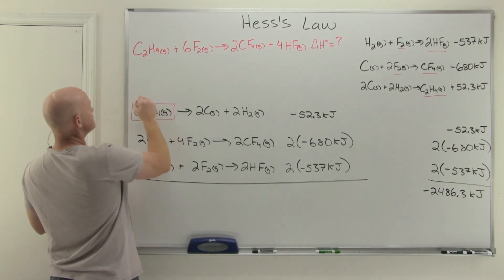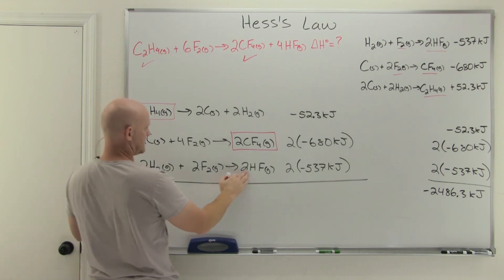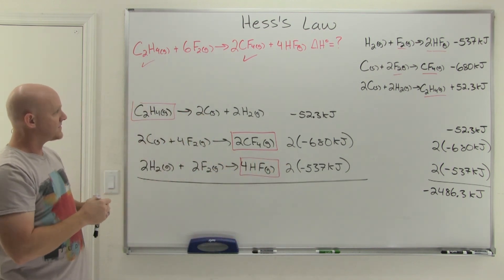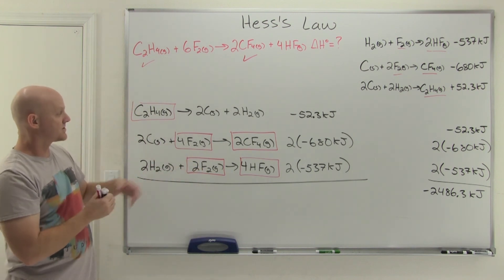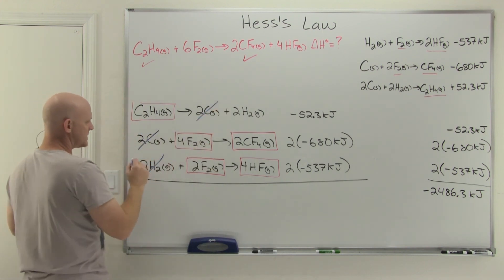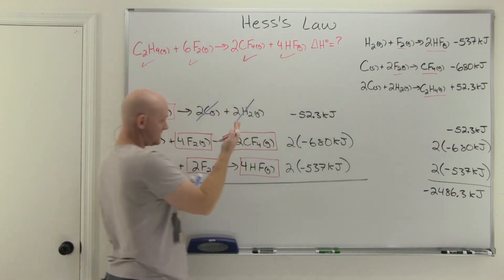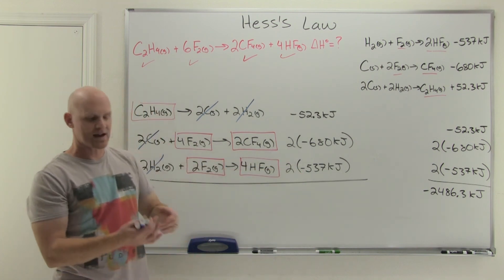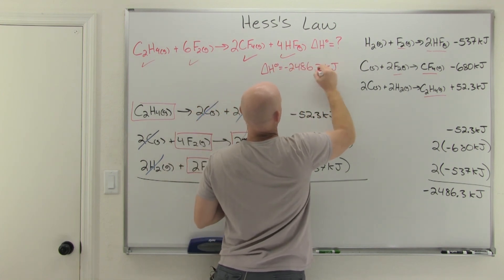Checking the cancellations: C₂H₄ is correct on the reactant side, two moles of CF₄ on the product side is correct, and four moles of HF on the product side is correct. For F₂, there were four moles in the doubled second reaction and two moles in the doubled first reaction, giving six moles of F₂ total on the reactant side — exactly what's needed. Two carbon on each side cancels, two H₂ on each side cancels. Everything we don't want in the desired reaction cancels out, confirming the three steps add up to the desired reaction with delta H of negative 2486.3 kilojoules.